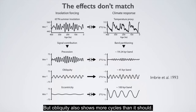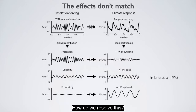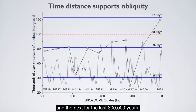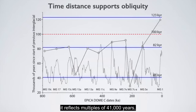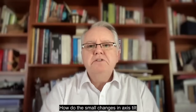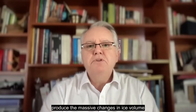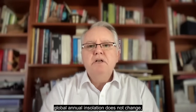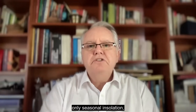Only changes in the tilt of the axis show a climate response proportional to the changes in insolation it produces. But obliquity also shows more cycles than it should. I measured the temporal distance between the start of each interglacial and the next for the last 800,000 years. The result is that, with small irregularities, it reflects multiples of 41,000 years — the frequency of obliquity. The 100,000-year cycle is nowhere to be seen.